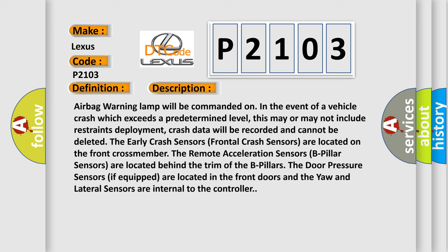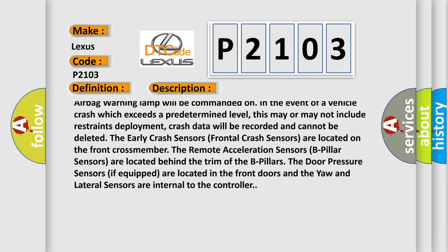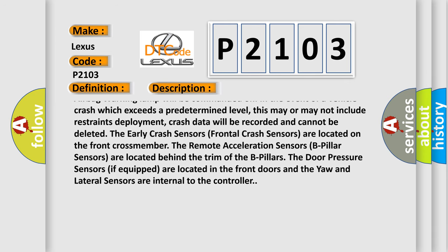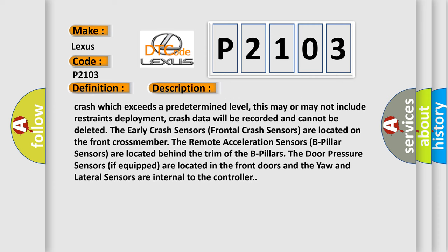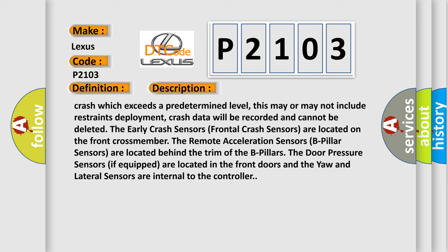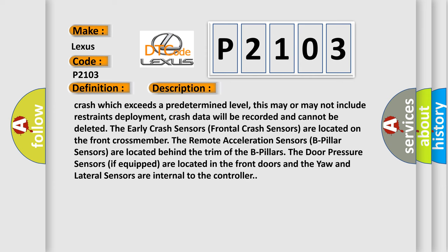The early crash sensors, frontal crash sensors, are located on the front cross member. The remote acceleration sensors, B-pillar sensors, are located behind the trim of the B-pillars. The door pressure sensors, if equipped, are located in the front doors. And the ORC and lateral sensors are internal to the controller.